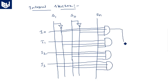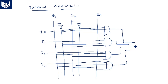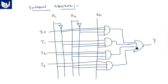All four AND gate outputs are connected to a 4-input OR gate, giving the final output Y. This is the complete internal structure of the 4 by 1 multiplexer.